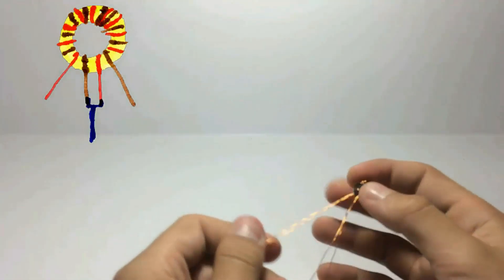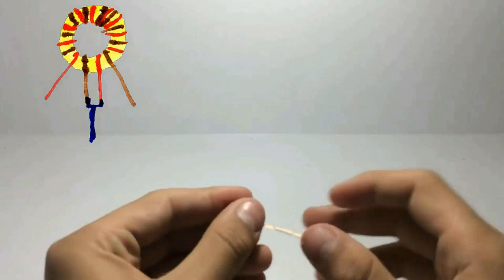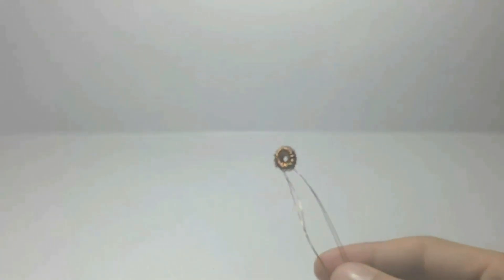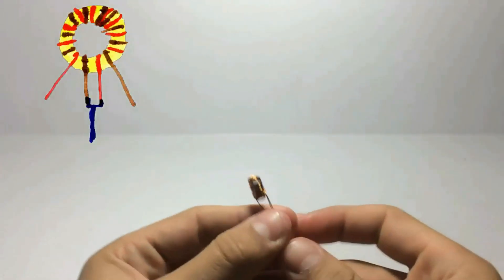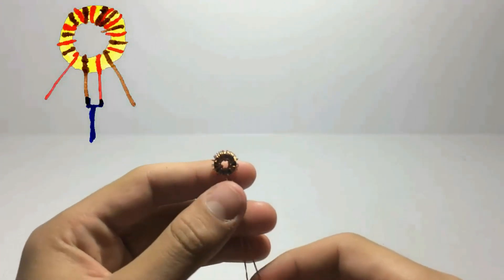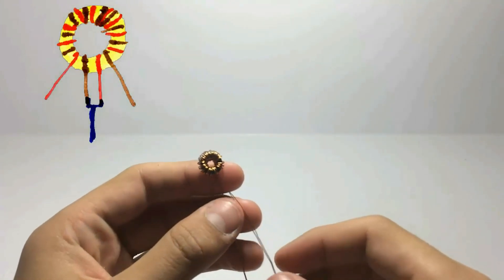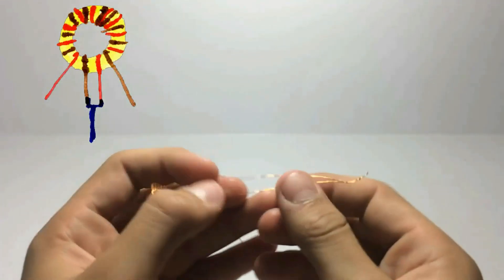Okay now our ferrite coil is almost finished, so now untwist the ends of the copper wire.